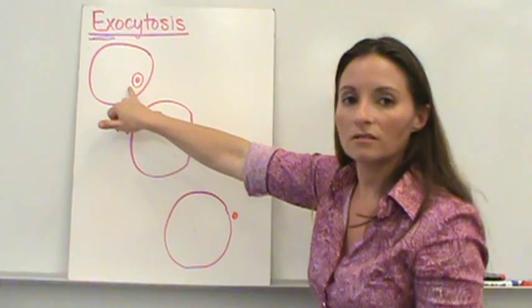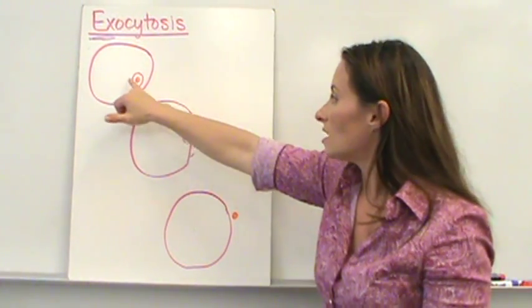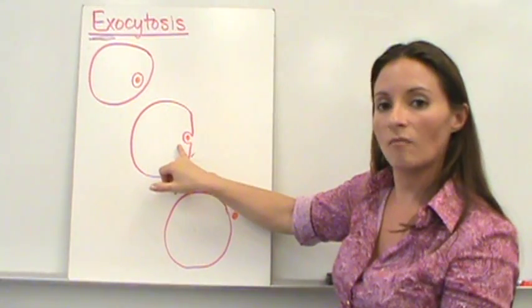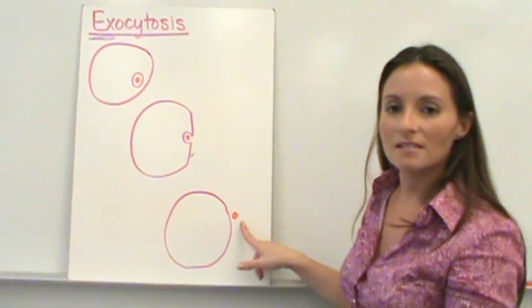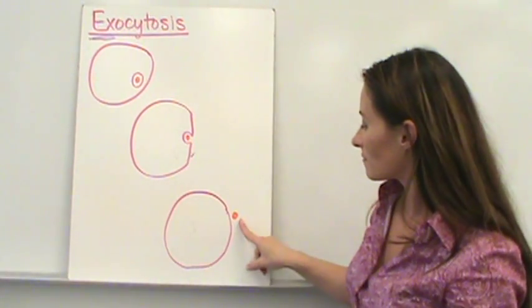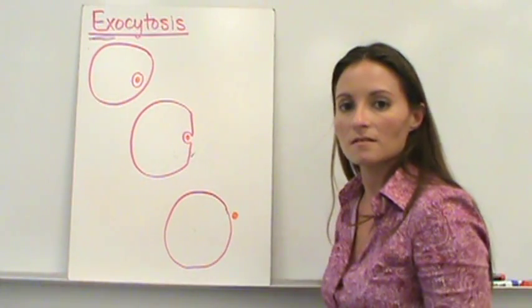We're taking this particle. This particle isn't needed. It's in a vacuole or a vesicle. It's going to attach itself to the cell membrane and then it's going to throw it out of the cell. And we have this particle that is now moved out of the cell through exocytosis.